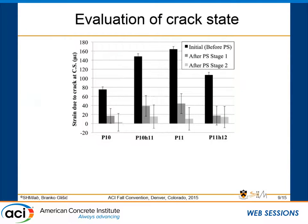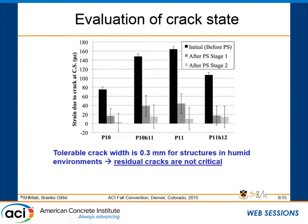We then wanted to evaluate the crack state. Note that here you see a strain value, so you multiply it by 0.6 meters — the length of the sensor — to get the crack opening. What you get is that the crack opening, when converted, is in the range of 0.01 millimeters, about 10 micrometers, which is far below the 0.3 millimeters that is the tolerable crack width. The bars shown represent 80% confidence, and zero is within 80% confidence for all of them. So residual cracks, if present, are not critical for the structure.